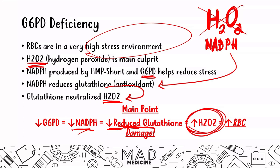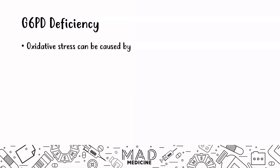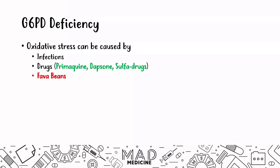This doesn't happen automatically — our body doesn't spontaneously produce hydrogen peroxide in amounts that cause problems in G6PD-deficient patients. Oxidative stress is usually caused by infections, drugs like primaquine, dapsone, and sulfa drugs, as well as fava beans. Fava beans are a type of bean that leads to increased oxidative stress, especially in patients with G6PD deficiency. Remember fava beans for Step 1 — it is only associated with G6PD deficiency.